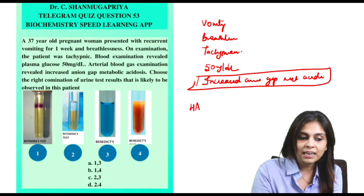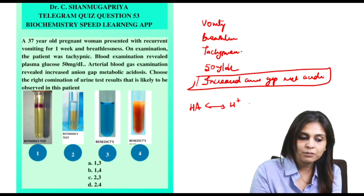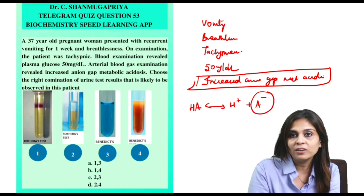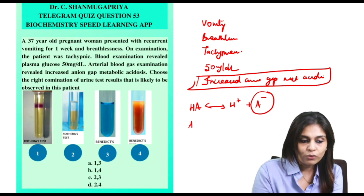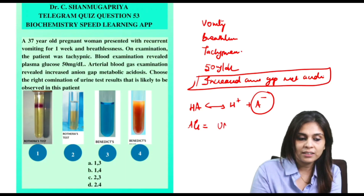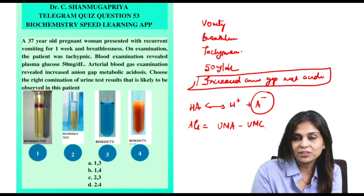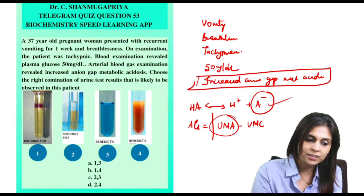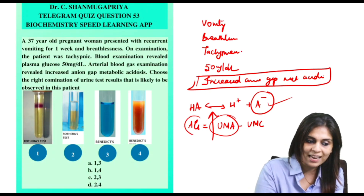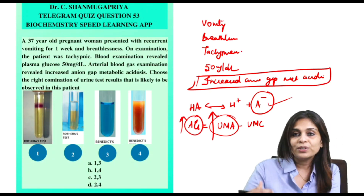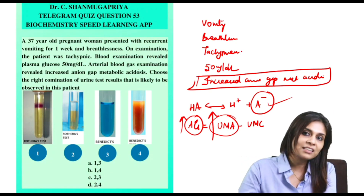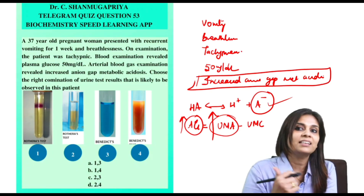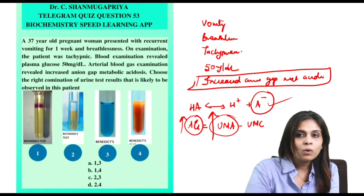Because all acids are HA — they dissociate to give H+ and A−, and this A− is an anion which gets elevated. Anion gap is defined as the difference between unmeasured anions and unmeasured cations. Whenever abnormal acids are generated, this unmeasured anion concentration increases, so naturally anion gap will be elevated. Thinking retrogradely: if it's a case of increased anion gap metabolic acidosis, you have to hunt for a cause of an abnormal acid that has been generated.